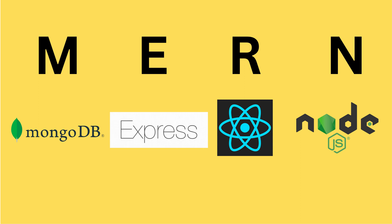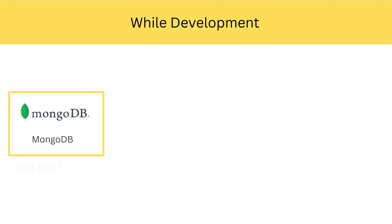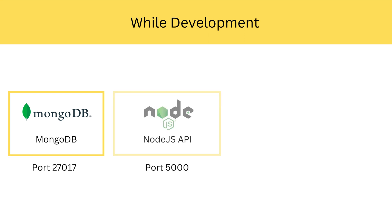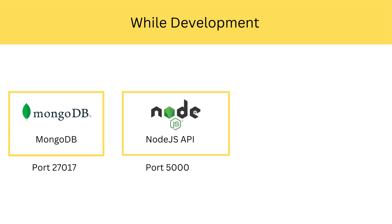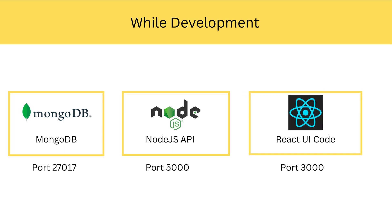Now that we understand the technologies needed to build the MERN stack, let's see what it takes to develop it on your local machine. First, we need to install MongoDB, and when we run MongoDB locally it uses port 27017. We also need Node.js, which we covered in the first episode. You build your API and run it on any port — for example, port 5000. Your React application runs on port 3000.